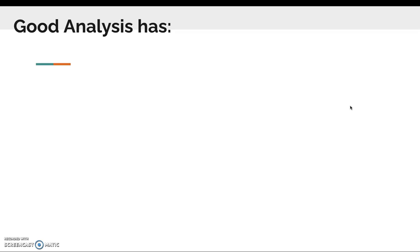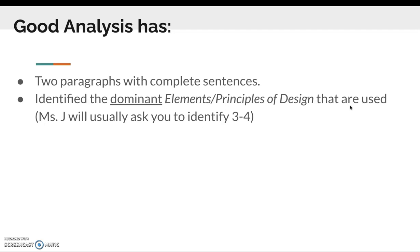A good analysis paragraph - you would be writing two paragraphs, one about the elements, one about the principles. So there are two paragraphs with complete sentences. Watch your grammar. When you complete these assignments in a Google Doc, you can use spell check. It's a good idea to reread what you typed so you know that it's actually coherent. Did you identify the dominant elements or principles of design that are being used? I'm going to usually ask you to identify three to four. Sometimes I'll ask you to identify two, it really depends on the task, but just choose the dominant elements or principles that stand out to you.